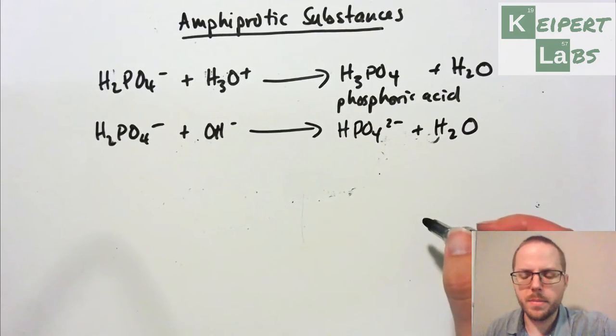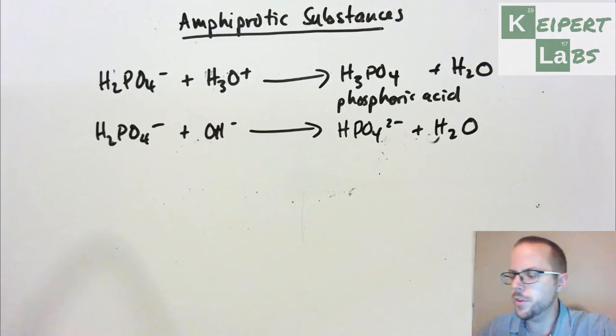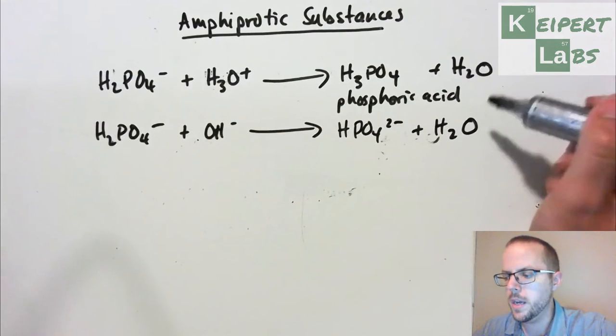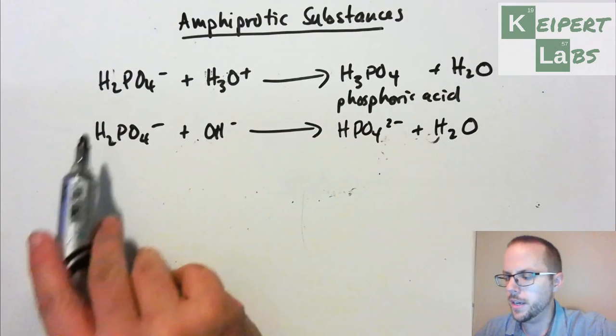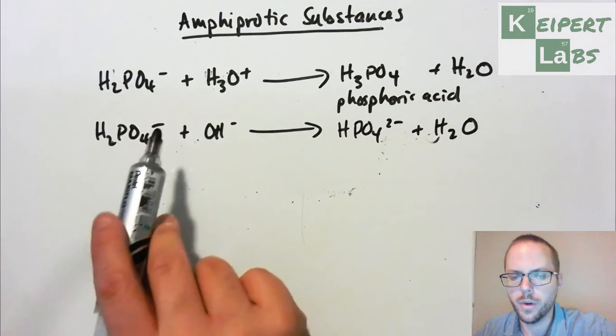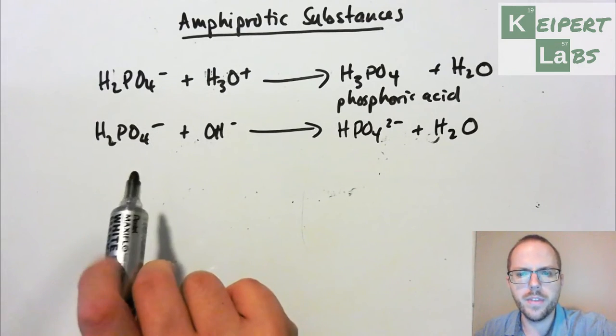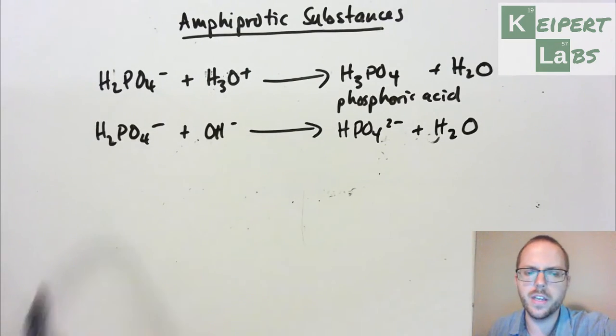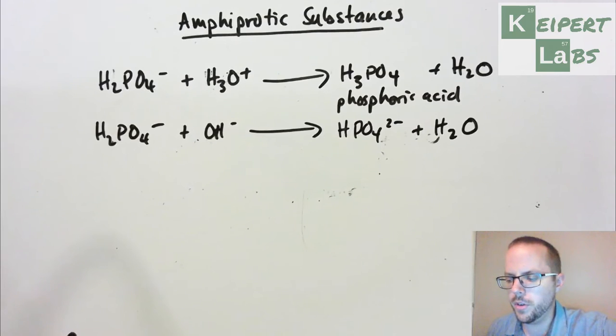So what we've done in this particular example, we've used chemical equations to show how this particular ion is able to act as either an acid or a base. Because this kind of a question, if it gets touched on in the exam, you're going to tend to need to be able to demonstrate that or to be able to identify how this is happening based on the chemical equation.